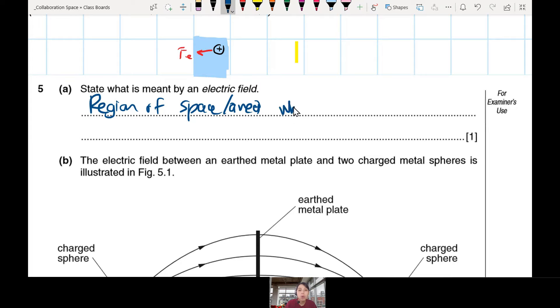What happens in the region of space? Where a charge, any charge, positive, negative, doesn't matter, this charge experiences an electric force. If you didn't say electric force, also okay, just force.